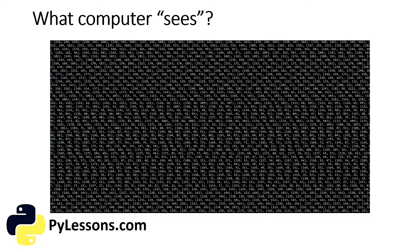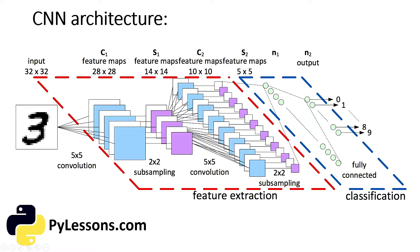Convolutional neural networks have a different architecture than regular neural networks. Usually neural networks transform an input by putting it through a series of hidden layers. Every layer is made up of a set of neurons where each layer is fully connected to all neurons in the layer before. Finally, there is a last fully connected layer, the output layer, that represents the predictions. Convolutional neural networks are a bit different.